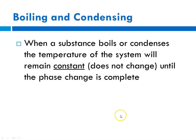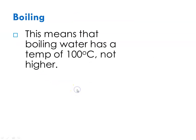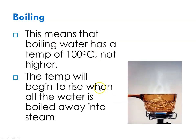Now let's talk about boiling and condensing. When a substance boils or condenses, the temperature of the system remains constant and does not change until that phase change is complete. Boiling water has a temperature of 100 degrees C — not higher, not lower. The temperature will only begin to rise when all the water is boiled away into steam. For example, if I had a choice between having boiling water thrown on me or being hit with steam, I would always take boiling water, because I know the boiling water is at 100 degrees C.